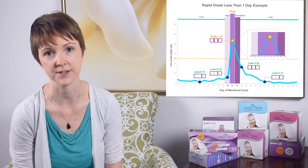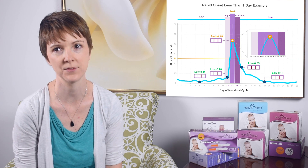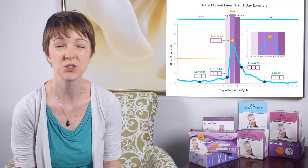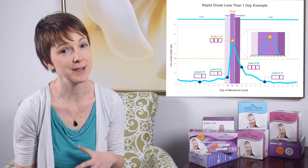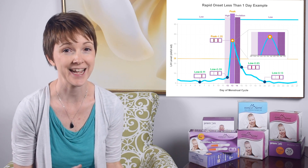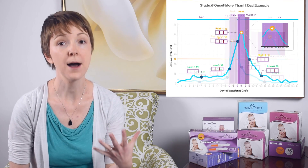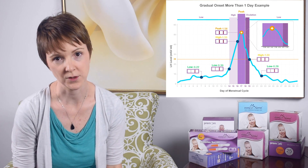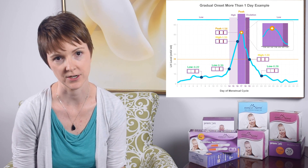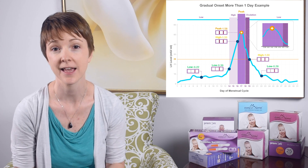There are two types of surges. Some women have a rapid onset LH surge — a very quick surge from base level to peak in 24 hours or less, so basically your surge day is your peak day. But other women have a gradual onset LH surge, lasting two to six days.